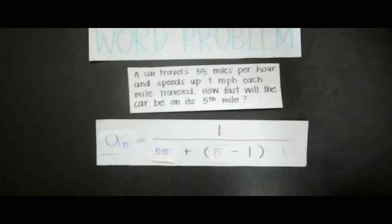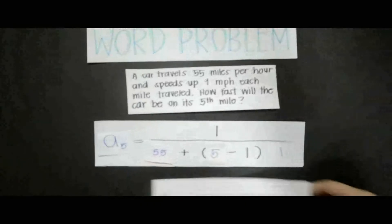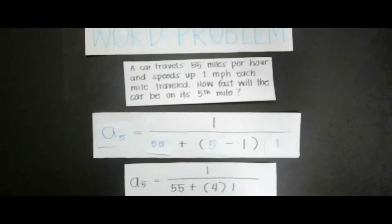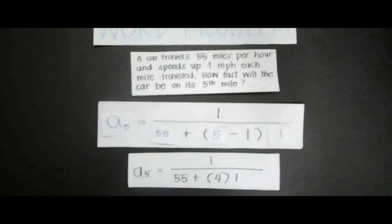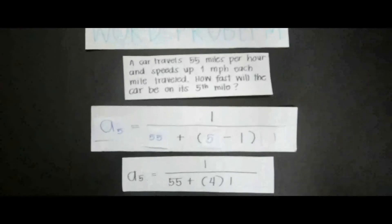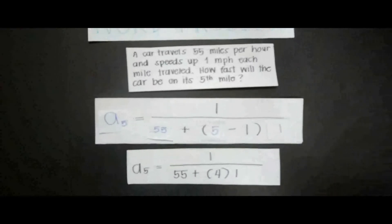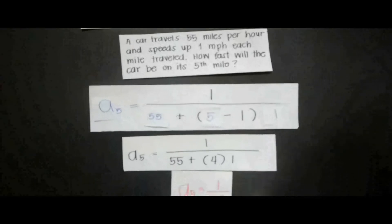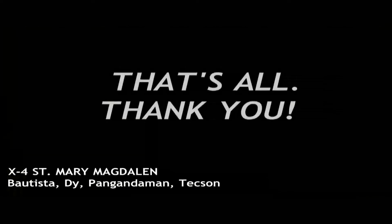Now perform the operation. a_n will become 1 over 55 plus the quantity of 4 and 1. The answer will become 1 over 59, or 59 miles per hour. Good luck!